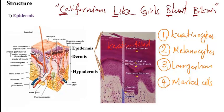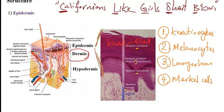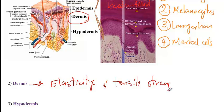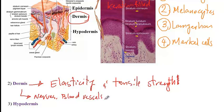The next layer of the skin is the dermis, which has an abundant concentration of collagen and elastic fibers to provide elasticity and tensile strength. It is also the layer that contains nerves, blood vessels, lymphatic vessels, and exocrine glands.